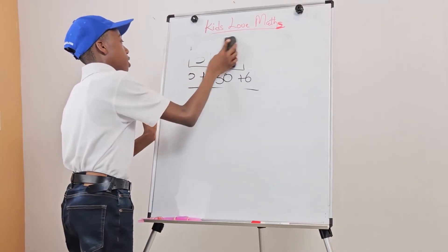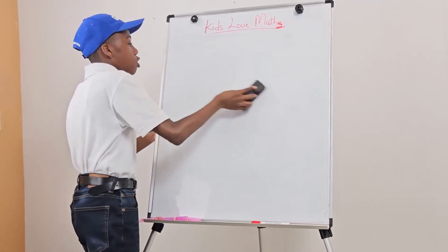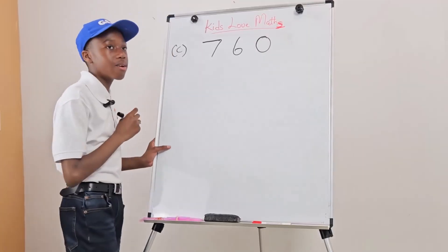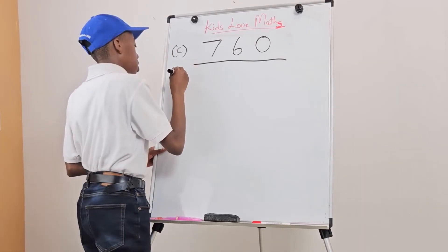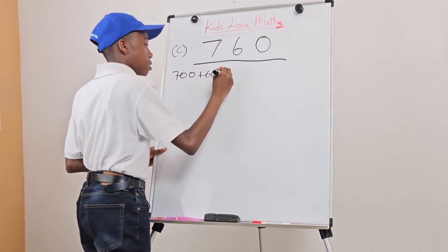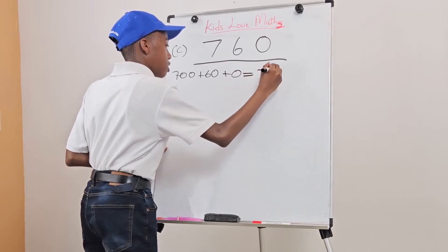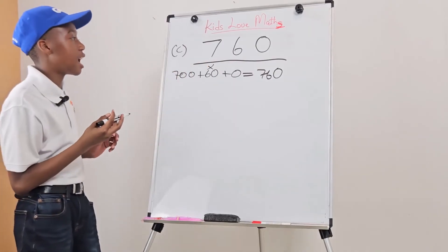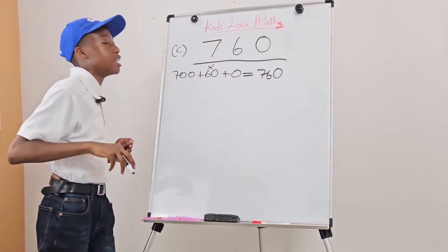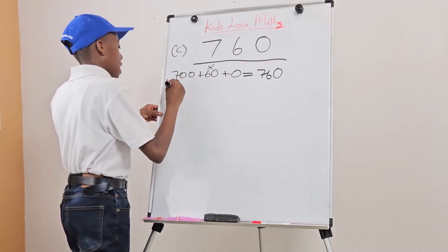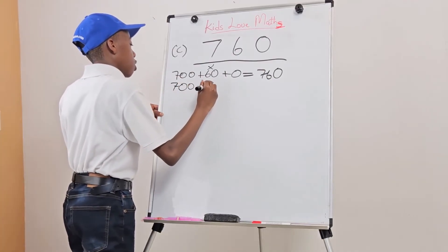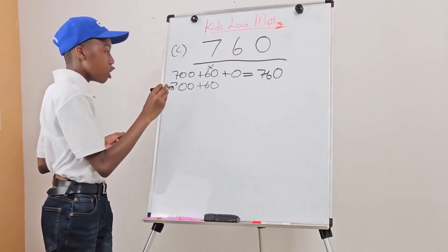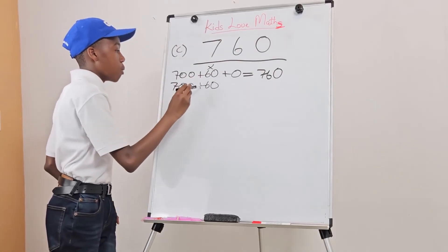The next question is 760. How would we write it? You might think we write it as 700 plus 60 plus 0 equals 760 — but that is actually incorrect. Anytime we have a 0 in any of the places, we do not write it. So we would write it as 700 plus 60. The reason we don't write the 0 in the ones place is also because 60 is already representing it in expanded form.